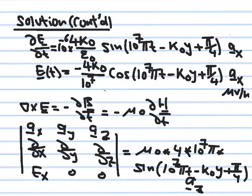This is 10^7 π, and we have everything else we need. This gives us the expression E(t) as a function of time.